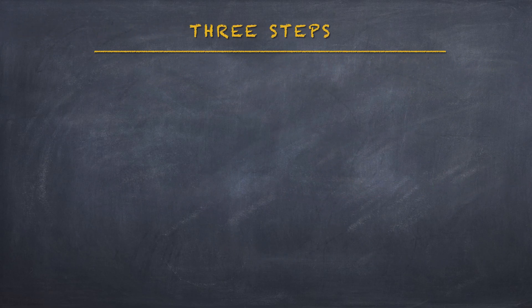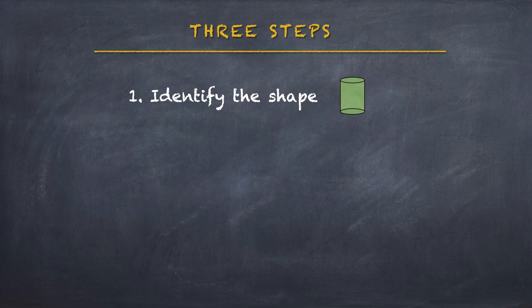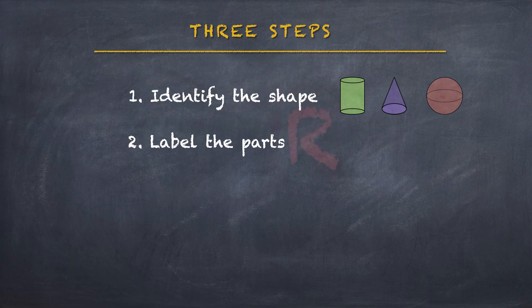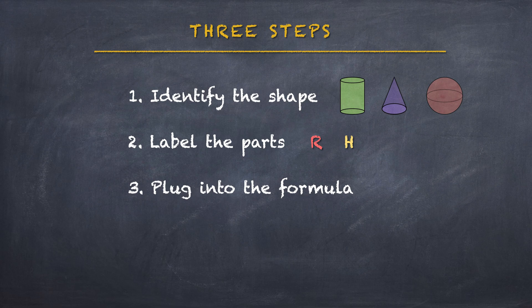There's really just three steps to finding volume of circular shapes. First, you're going to identify the shape - is it a cylinder, cone, or sphere? Once you know what shape it is, you're going to label the parts. That's either R for radius or H for height. And then the third and final step is once you have your parts labeled, you just plug them into the volume formula for that shape.